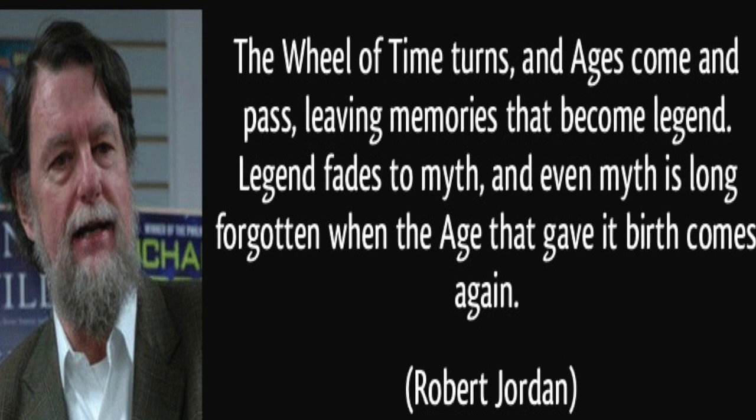Before we get into our list, let's cover some background. The main premise of the Wheel of Time is that world history is a cycle — the past is really also the future. The opening line of the books explains this well: "The Wheel of Time turns, the ages come and pass, leaving memories that become legend, legend fades to myth, and even myth is long forgotten when the age that gave it birth comes again." There are seven ages, and the books take place at the end of the Third Age.